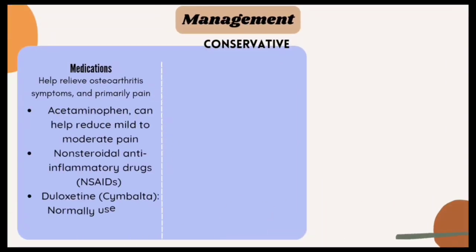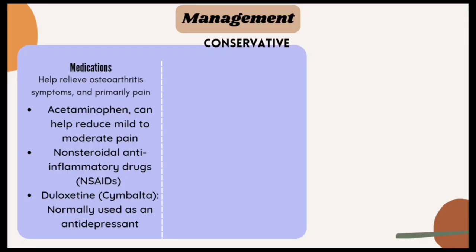As for the management, there are two types: conservative and surgical. For conservative management, patients are advised to lose weight. The second approach is medication, which helps relieve osteoarthritis symptoms and primary pain. There are three types of medication: acetaminophen, which can help reduce mild to moderate pain; non-steroidal anti-inflammatory drugs; and duloxetine, which is normally used as an antidepressant but is also prescribed to treat chronic pain, including osteoarthritis pain.